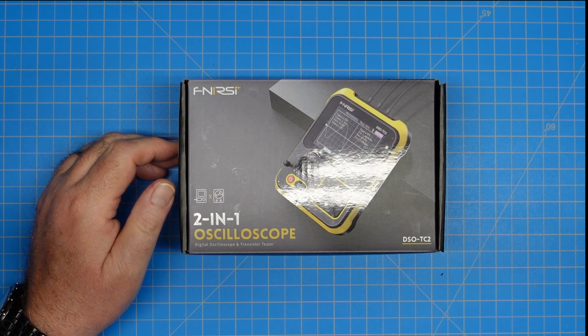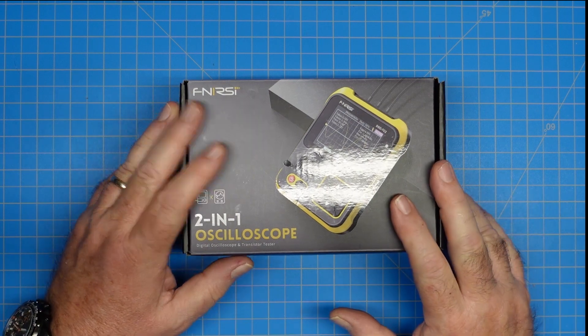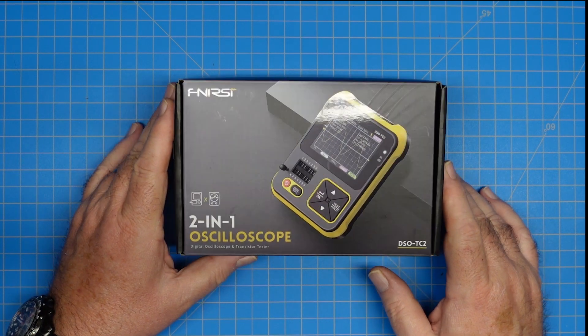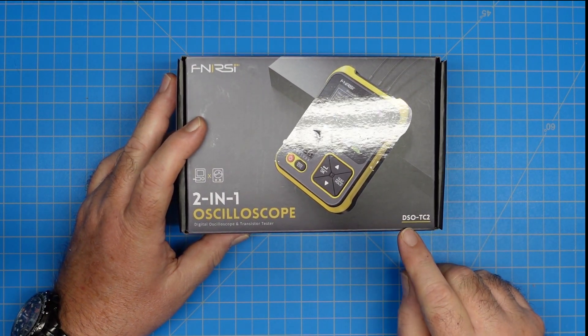Hey guys, this is Jim Kaye and 4YCD and you're watching FEP Labs Radio. Thanks for stopping by. Today we're going to take a look at the FNIR-C 2-in-1 Oscilloscope and Transistor Tester. This is the model DSO-TC2.